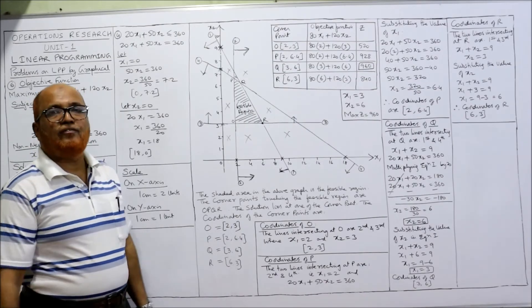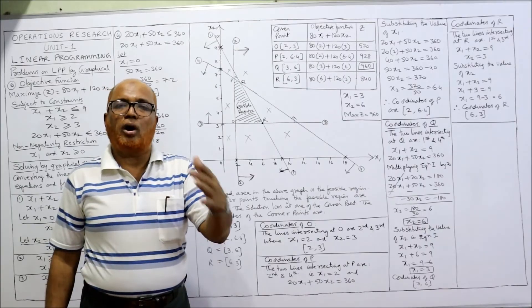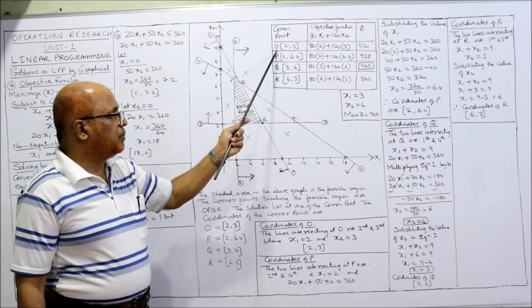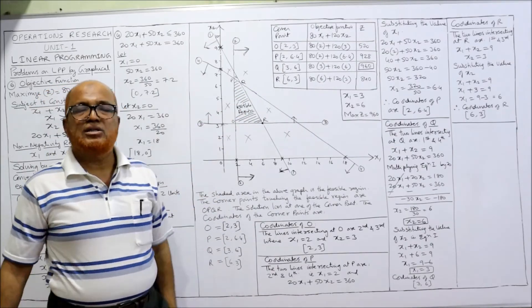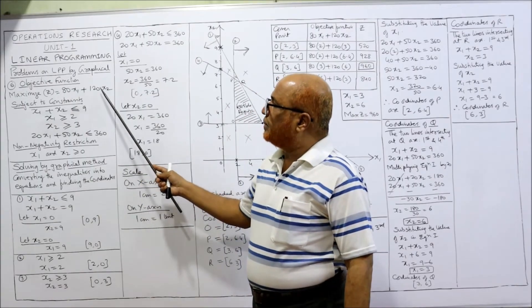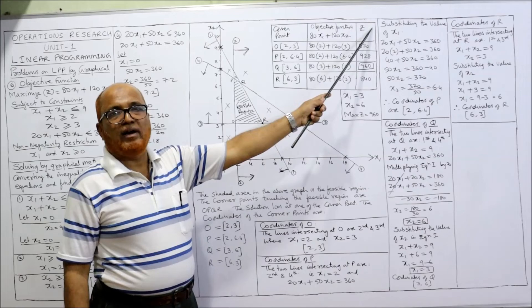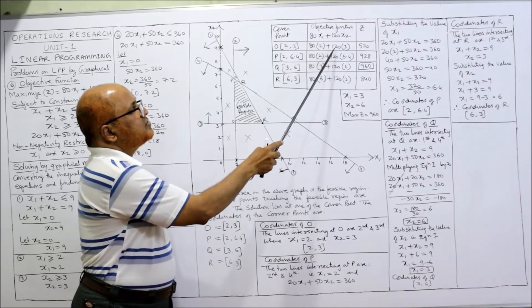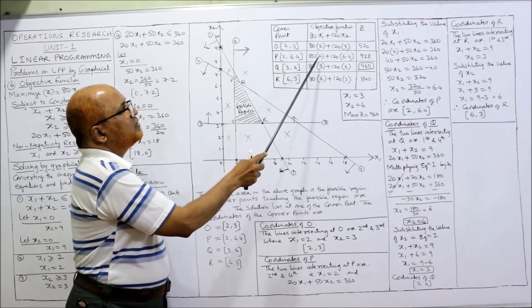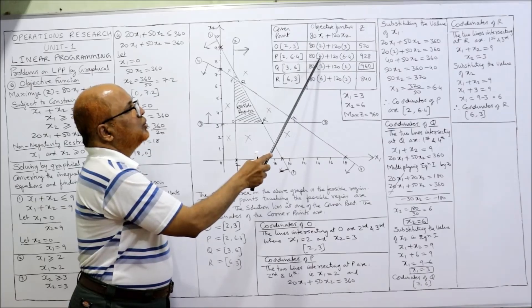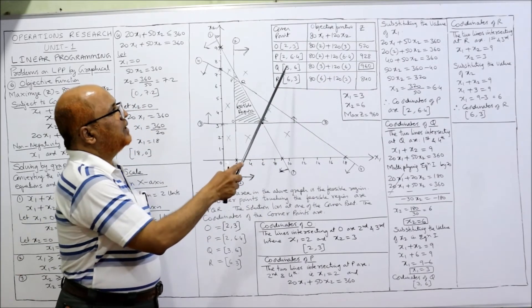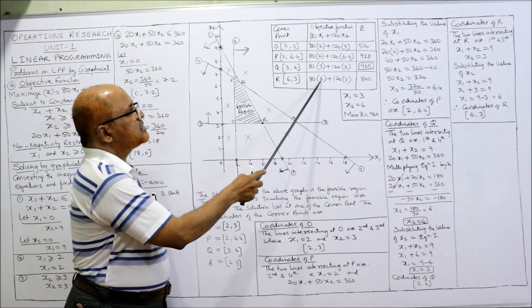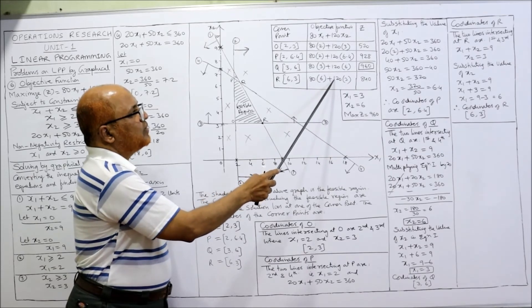Now we evaluate the objective function z = 80x1 + 120x2 at each corner point. At O(2,3): 80(2) + 120(3) = 520. At P(2, 6.4): 80(2) + 120(6.4) = 928. At Q(3, 6): 80(3) + 120(6) = 960. At R(6, 3): 80(6) + 120(3) = 840.